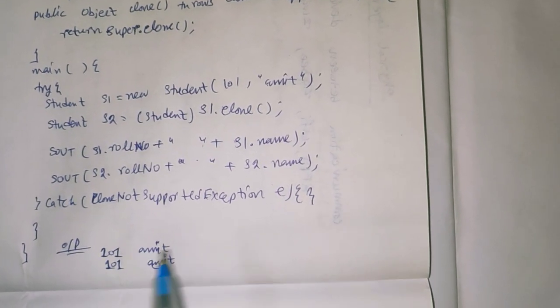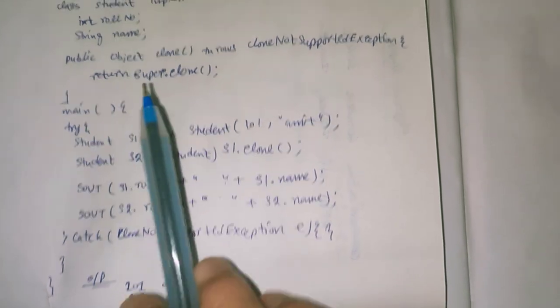Output is 101 amit, 101 amit. This is the type of thing inside our object cloning.